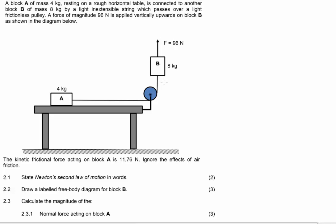It passes over a light frictionless pulley which means no friction is going to be caused by the pulley itself. Then there's a force being applied of 96 Newton vertically upward on block B as is shown in the diagram.